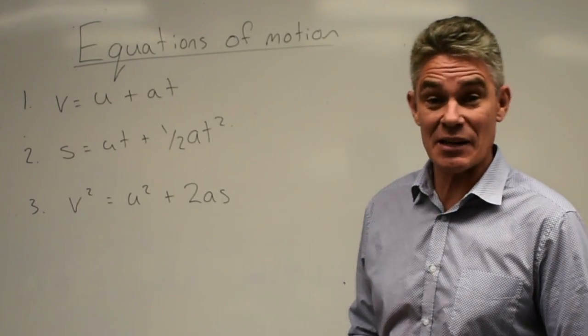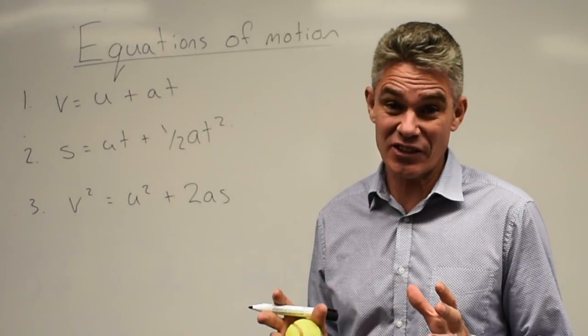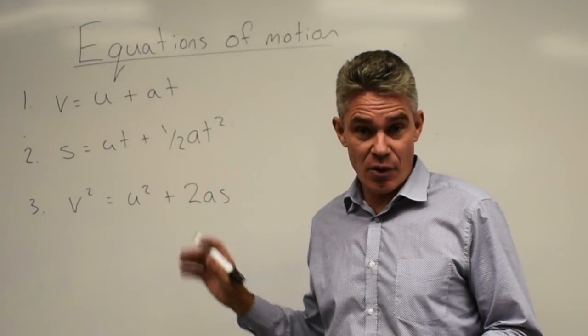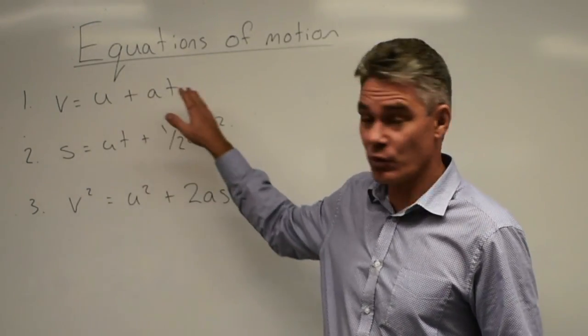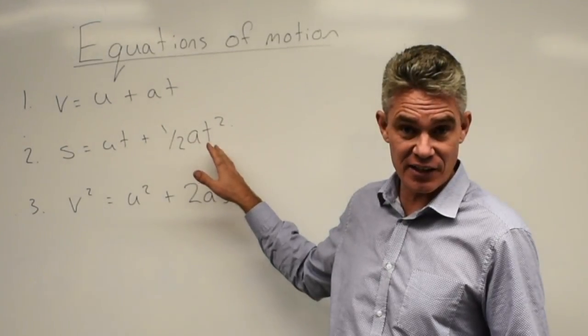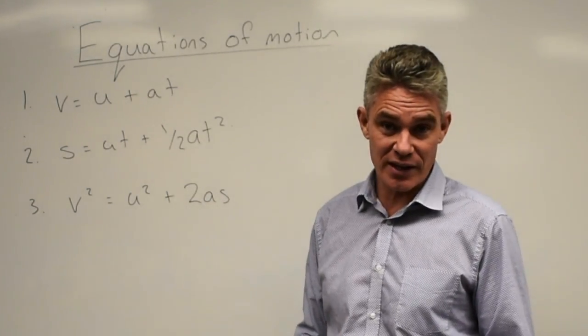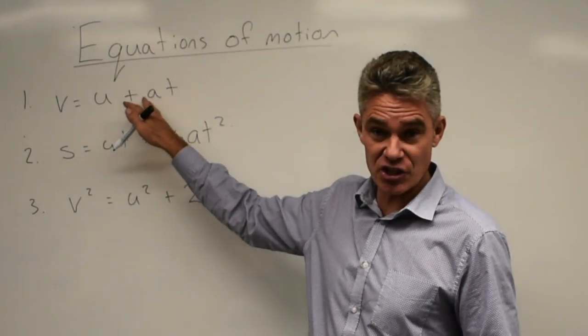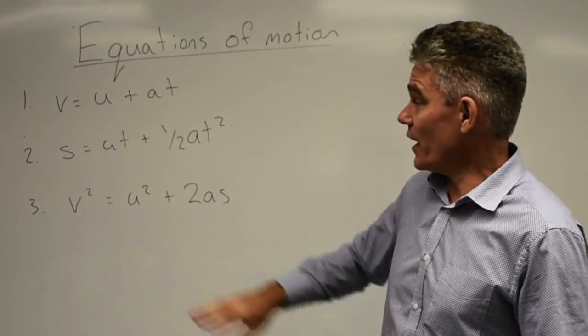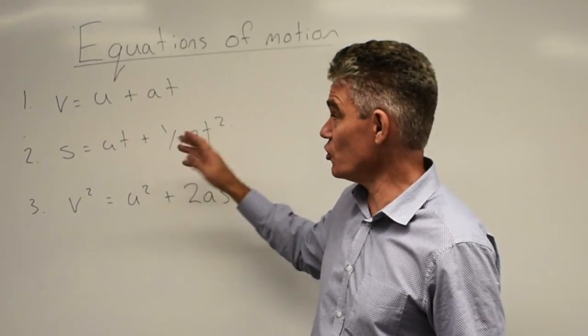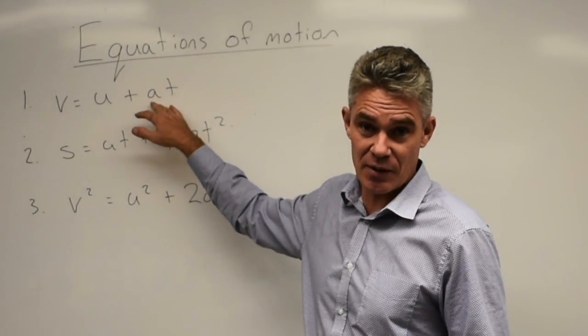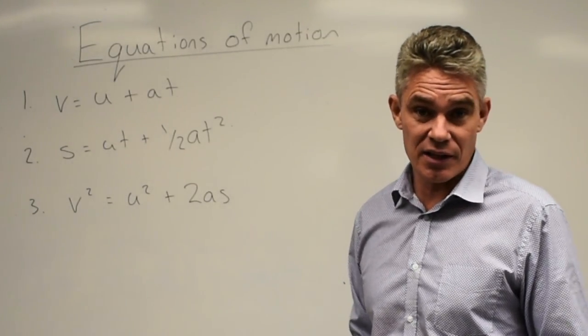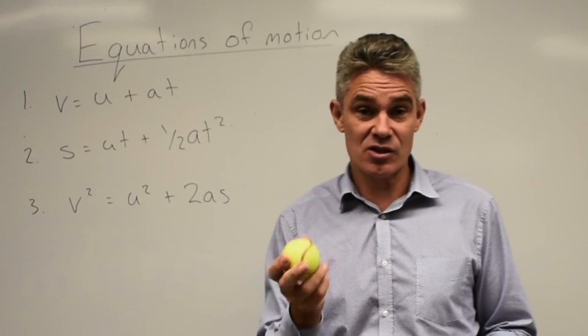Year 11 Physics, we're looking at something called kinematics. And that is the study of motion without actually describing what causes the motion. And we're looking at the three equations of motion at the moment. V equals U plus AT. S equals UT plus half AT squared. And V squared equals U squared plus 2AS. V is the final velocity of an object. U is the initial. A is the acceleration. And T is the time that we're interested in. Now, the key with these three equations is that they assume that acceleration is constant.